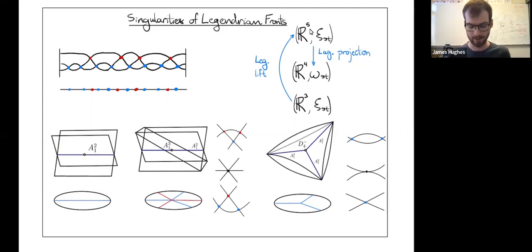If I want to add a third strand and do a Reidemeister 3 move, then I get these three sheets. So my first two sheets plus the third one here. I can encode the singularities of this front where these three sheets cross by this hexavalent vertex down here.